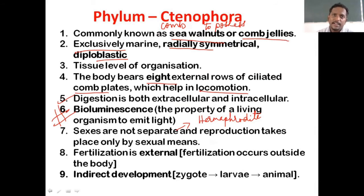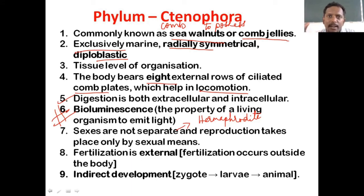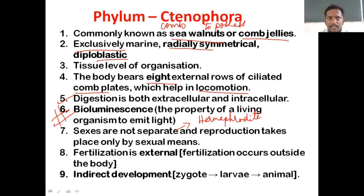And finally the last point: indirect development. There are two types of development — indirect (primitive) and direct (advanced). In indirect development, as with the example of a frog, the adult and the larva do not resemble one another, and the organism undergoes many larval stages — this is called metamorphosis. Here also it is indirect development, where young ones are not similar to adults. After fertilization, the zygote undergoes numerous larval stages to form the adult.